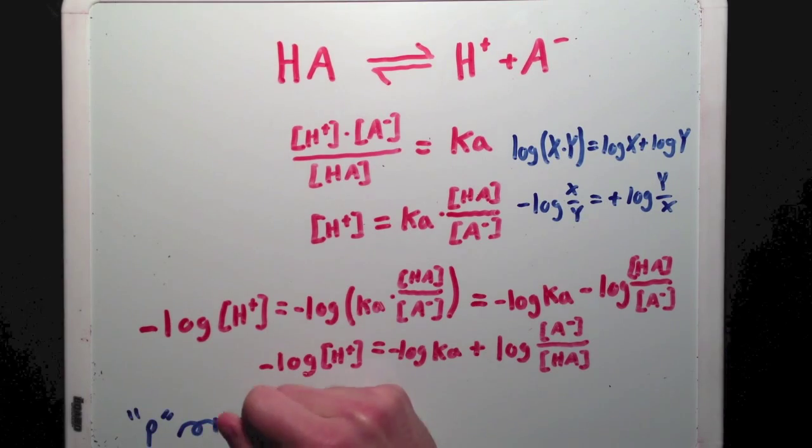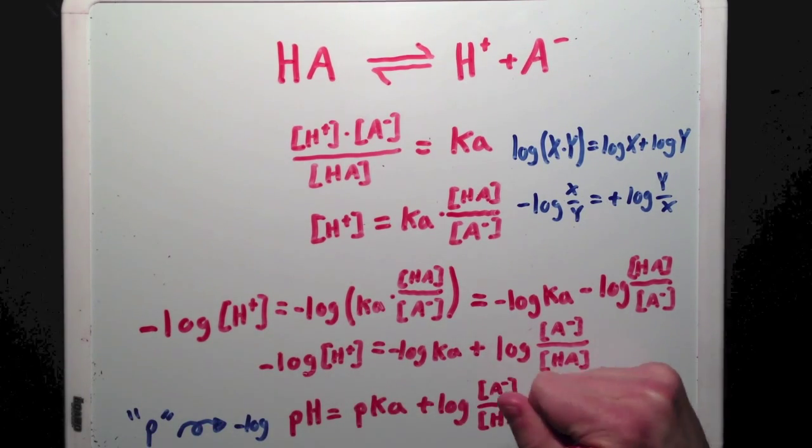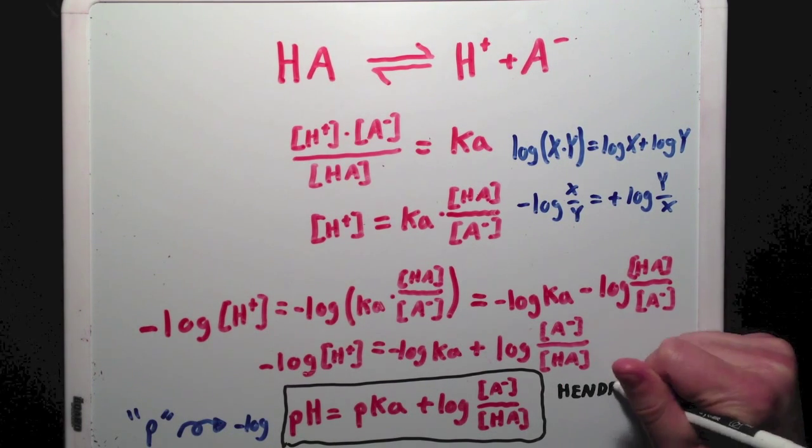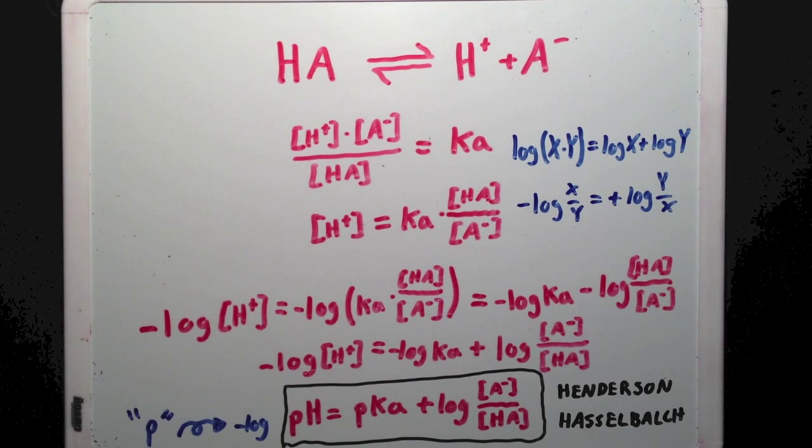Now, since we can use p as a symbol for negative log, we come to the expression pH equals pKa plus the log of the ratio of A minus to HA. This is called the Henderson-Hasselbalch equation and is extremely useful for making calculations with buffers. And you should definitely consider committing this equation to memory.